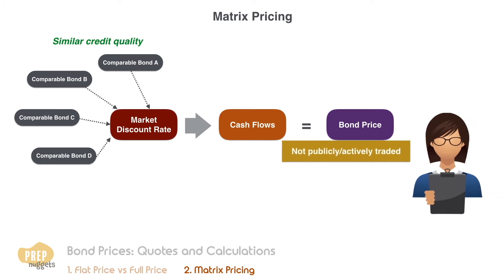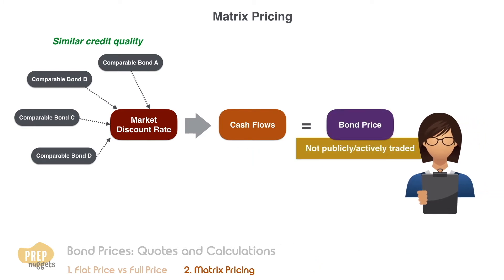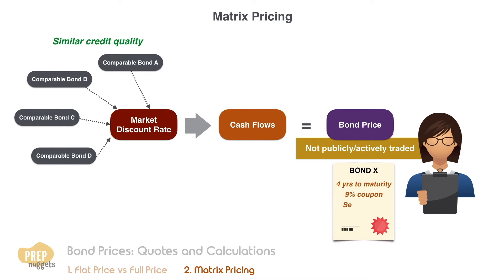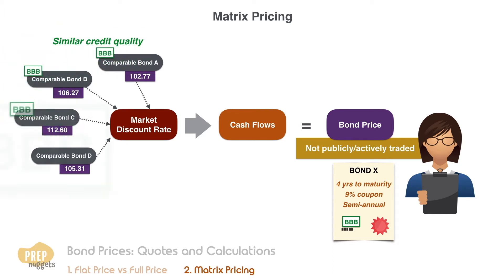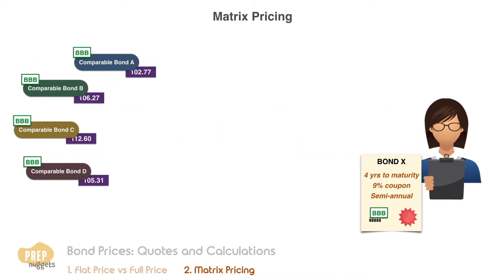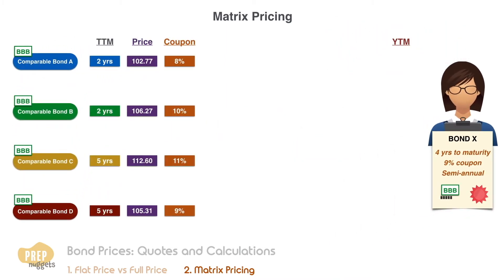For example, an analyst wishes to determine the price of a bond which is not publicly traded. This bond has four years left to maturity and pays 9% fixed coupons semi-annually. What she can do is find the market prices of a number of actively traded bonds that have similar credit quality. For example, if the bond has a credit rating of BBB, the comparable bonds should also have a credit rating of BBB. The next step is to determine the yield to maturity of these bonds based on their prices, coupon rates, and time to maturity.